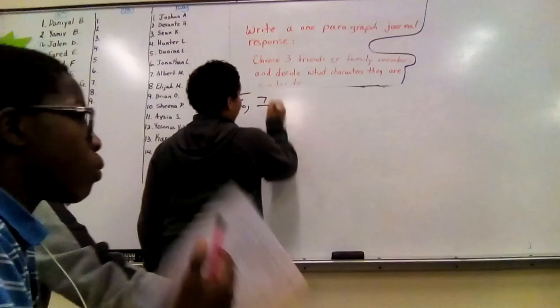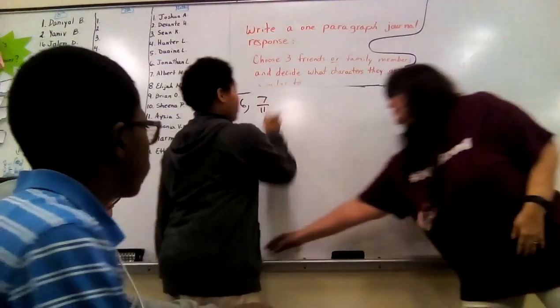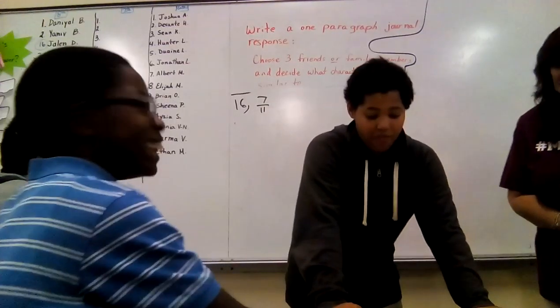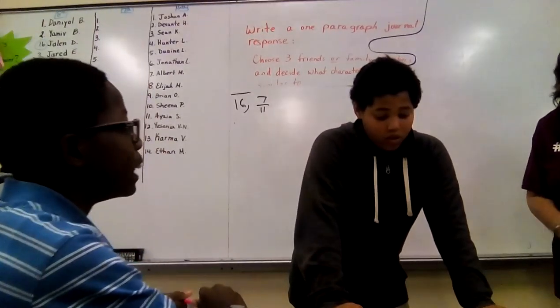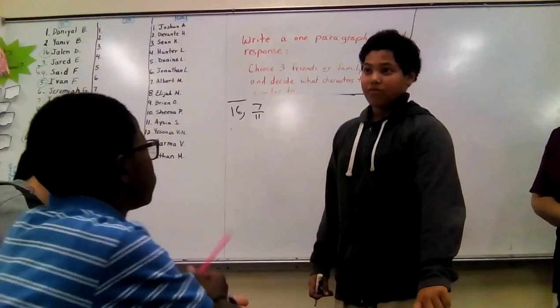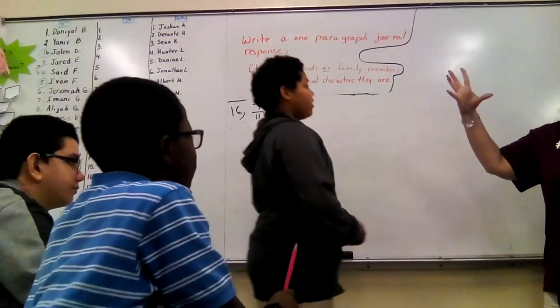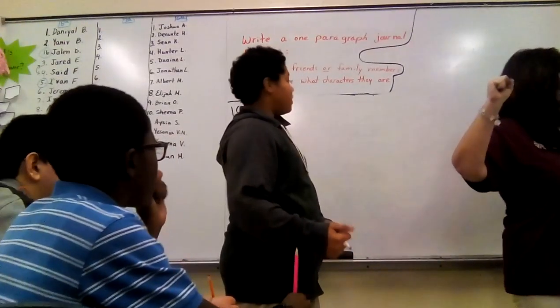Okay, so I'm going to do 16. Then I'm going to call somebody else, because 16 is very easy. So 16. 16 is 7 over 11. Okay? Now we're going to try to find the reciprocal of 7 over 11.